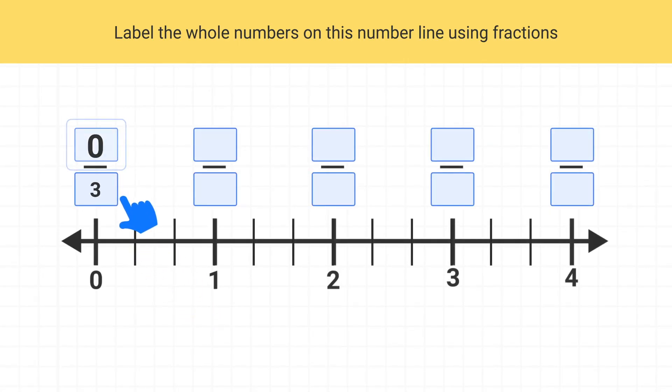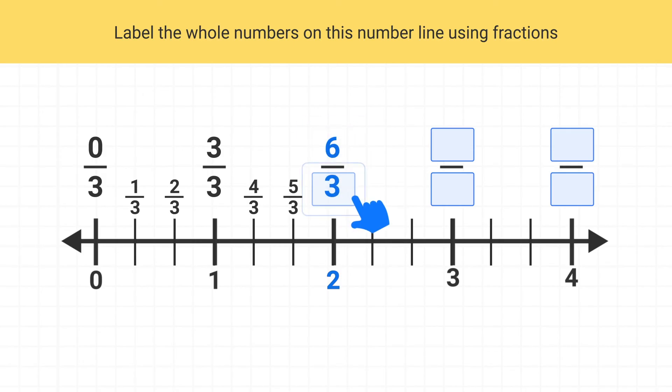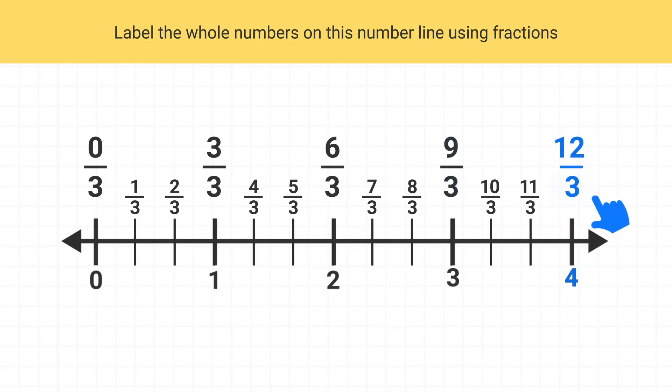You start at 0 thirds, and then you can see 1 whole is equal to 3 thirds. 2 wholes is equal to 6 thirds, and 3 wholes is equal to 9 thirds. 4 wholes is going to be 12 thirds.